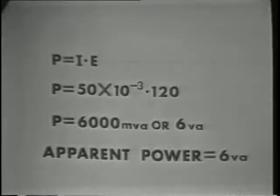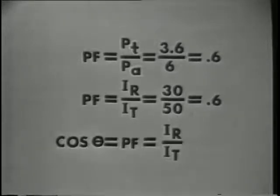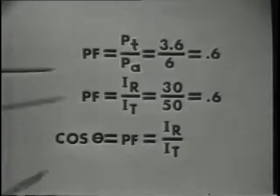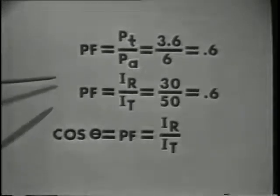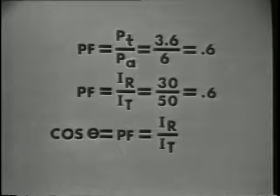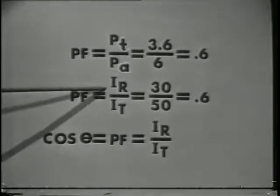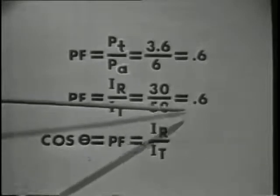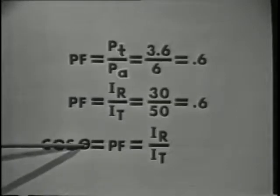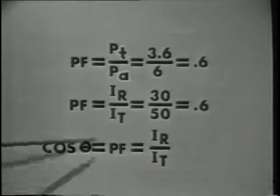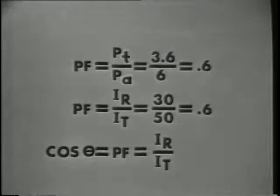The ratio of true power to apparent power is the power factor. Stated mathematically, power factor equals true power over apparent power, or 3.6 over 6 equals 0.6. The power factor for our circuit is 0.6. Since the currents in the circuit tell us the amount of power in each branch, we can use the ratio of these currents to determine the power factor: IR over IT, 30 over 50 equals 0.6. Notice also that the cosine of angle theta equals IR over IT, or the cosine of theta equals the power factor.